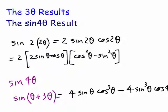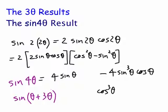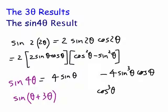Your sin(4θ) result is a bit more complicated: four sin(θ)cos³(θ) minus four sin³(θ)cos(θ).